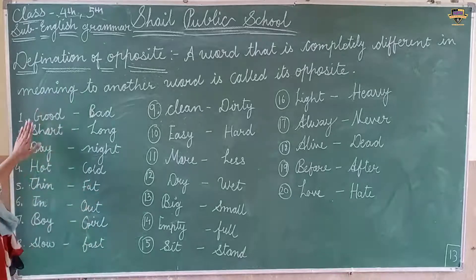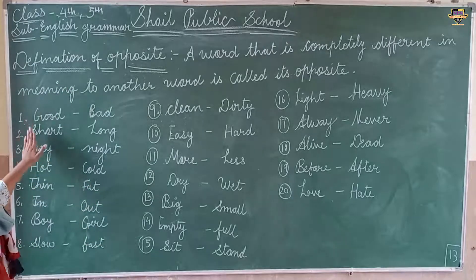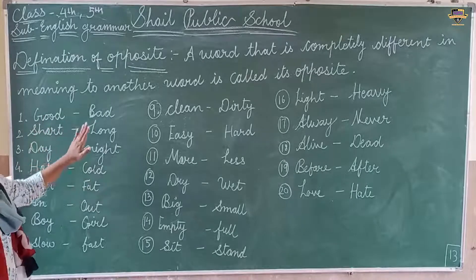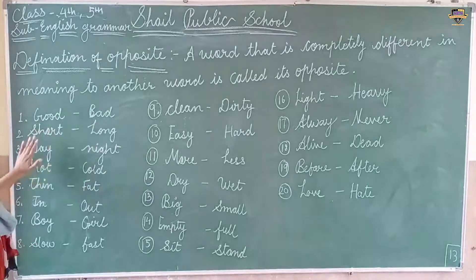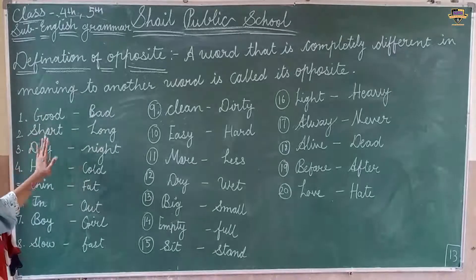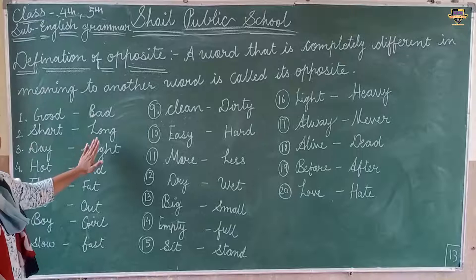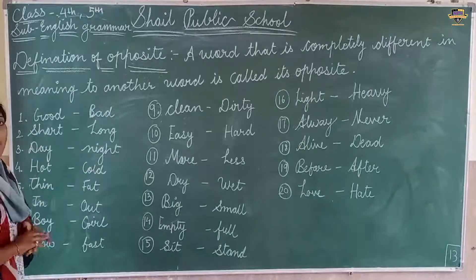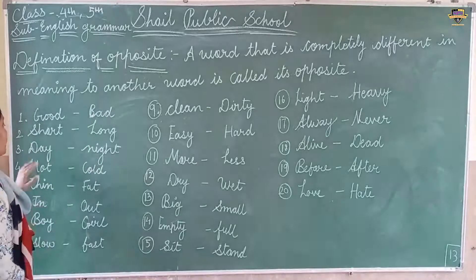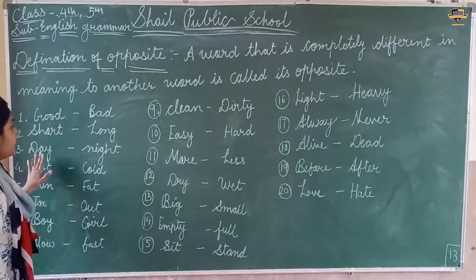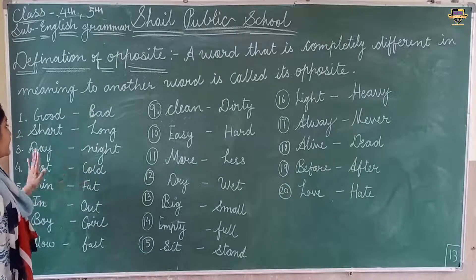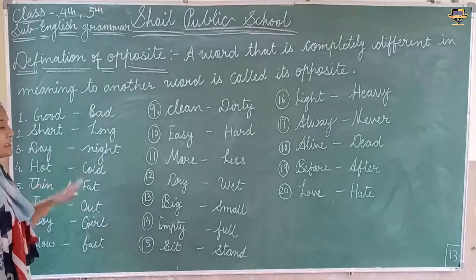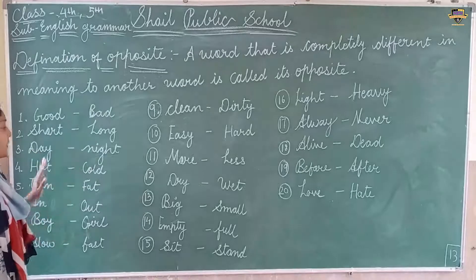Good — opposite word is Bad. Short — opposite word is Long. Night — opposite word is Day.